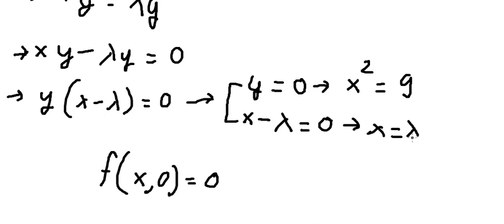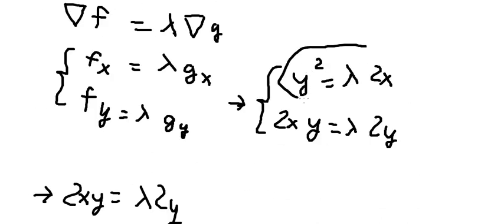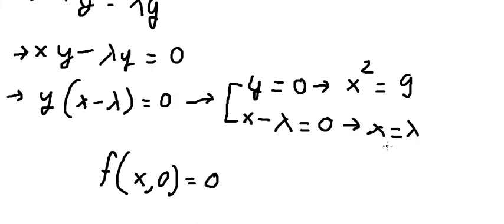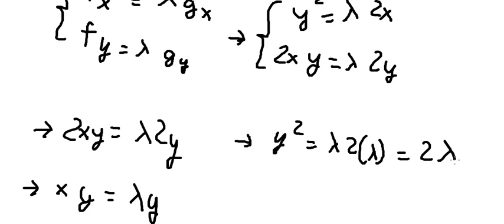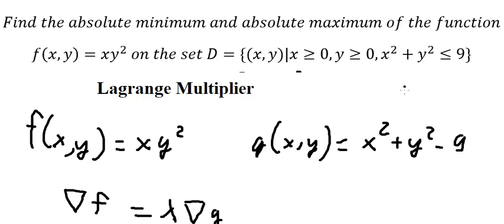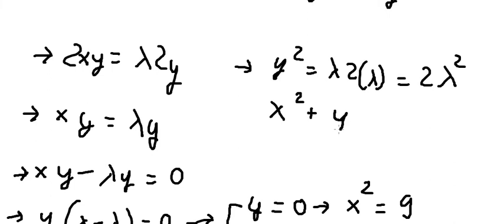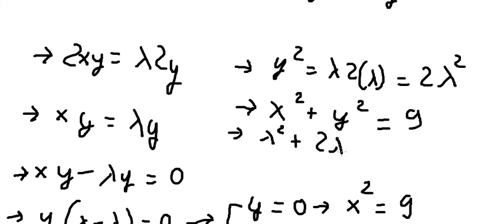For the next case, x equals lambda. We take the first equation and substitute x equals lambda into it, giving 2 lambda squared. Now using the constraint x squared plus y squared equals 9, we substitute lambda for x and 2 lambda squared for y squared, giving us 3 lambda squared equals 9.